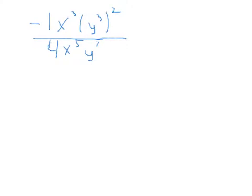So now our problem is negative 1x to the third times y to the third to the second power, divided by 4x to the fifth times y to the first.